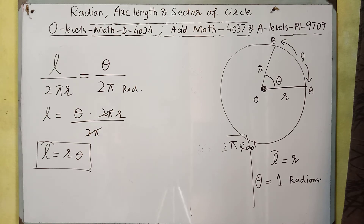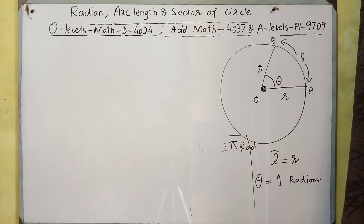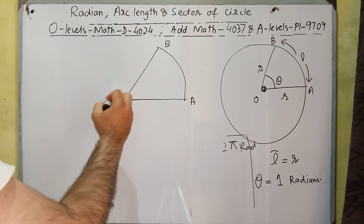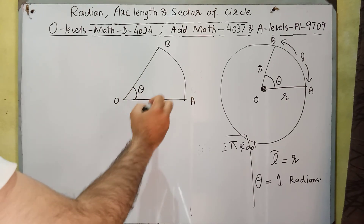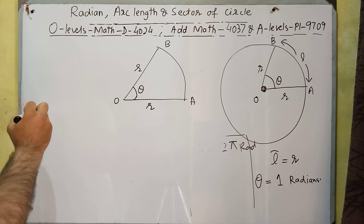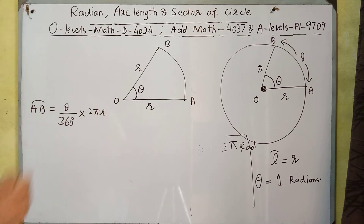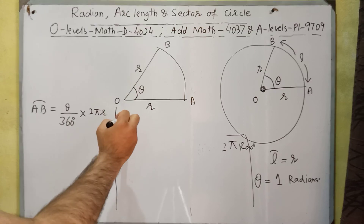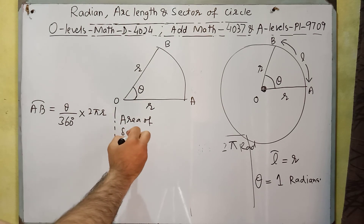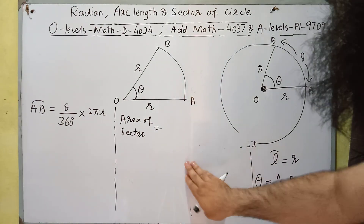Next, we have the area of a sector. For sector AOB with angle theta and radius r, the arc length AB equals theta over 360 multiplied by 2πr. Similarly, the area of a sector is equal to theta over 360 multiplied by πr squared.